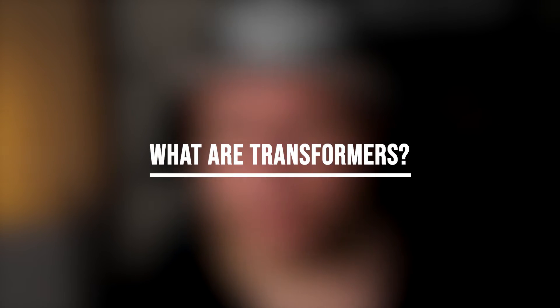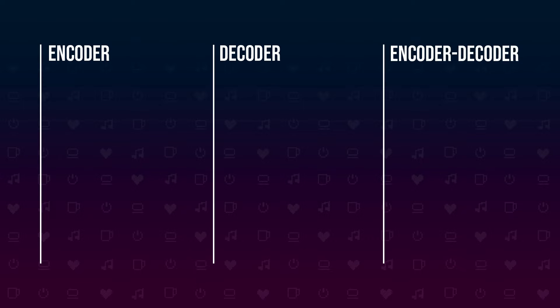What are transformers? Transformers come in different shapes and forms. They can be classified into encoder, decoder, and encoder-decoder models. On a high level, you can say the primary use case for encoders is to understand input, decoders generate new output, and encoder-decoder models combine both capabilities.